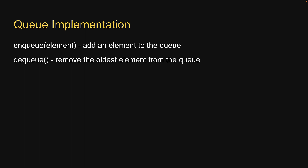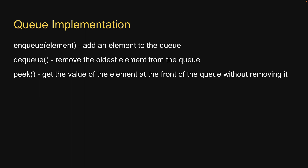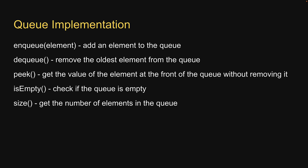Apart from these two, we are going to implement a few more operations: peek to get the value of the element at the front of the queue without removing it, isEmpty to check if the queue is empty, size to get the number of elements in the queue, and print to visualize the elements in the queue.